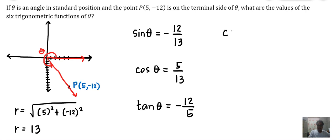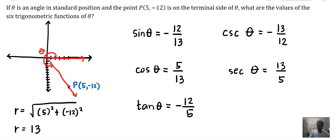Cosecant of theta is negative 13 over 12. Secant of theta is positive 13 over 5. Cotangent of theta is negative 5 over 12. So for this example, sine of theta, tangent of theta, cosecant of theta, and cotangent of theta are negative.